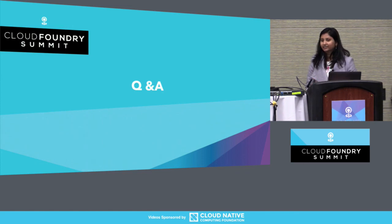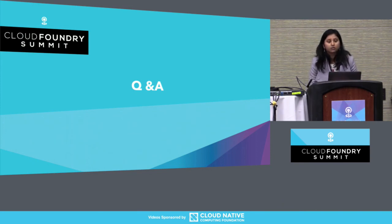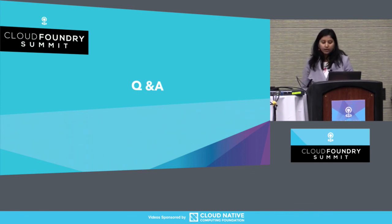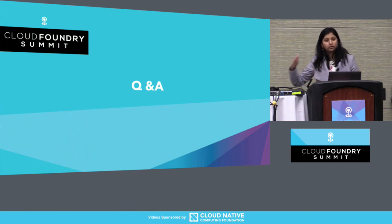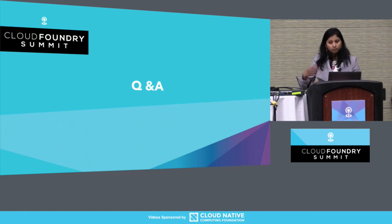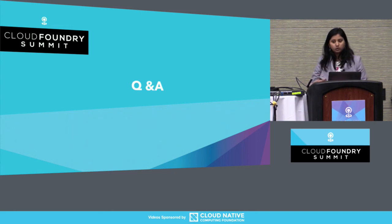Q: What reporting capabilities do you have in UAA? A: In UAA, we have audit events generated for all administrative and access activities, and those events can be streamed via syslog. In Cloud Foundry, there is a component called Loggregator which streams all events — not just from UAA but from other system components as well. You can then use a SIEM product like Splunk for correlation and reporting. Out of the box we do not provide reporting capabilities, but you can plug in your own reporting into UAA through the syslog channel.